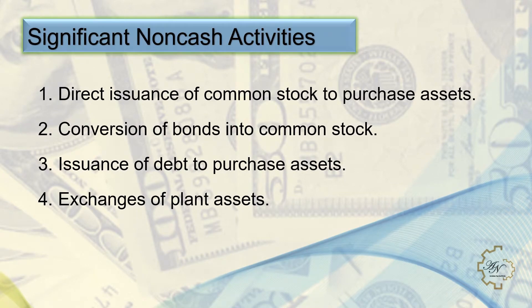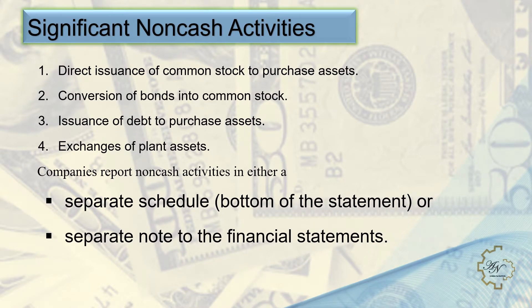Significant non-cash activities: not all of a company's significant activities involve cash. Examples include: direct issuance of common stock to purchase assets, conversion of bonds into common stock, direct issuance of debt to purchase assets, and exchanges of plant assets. Companies do not report these in the body of the statement of cash flows. Instead, they report these activities in either a separate schedule at the bottom of the statement or in a separate note or supplementary schedule to the financial statements.